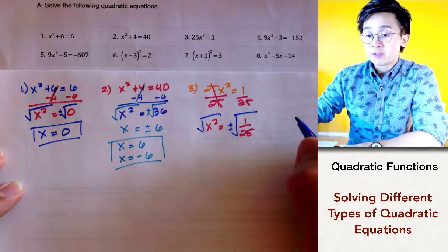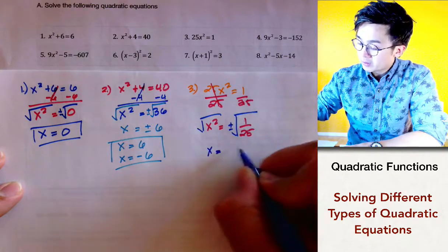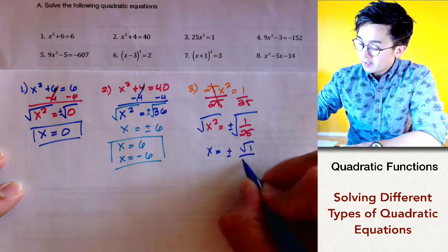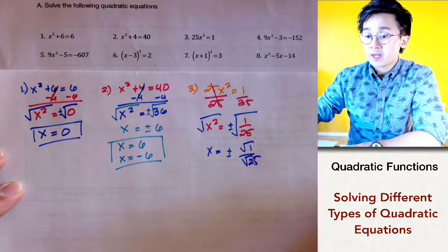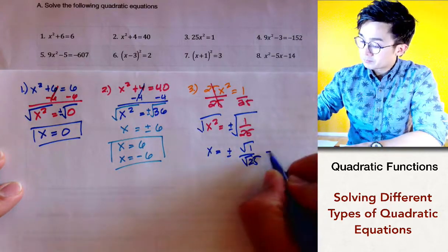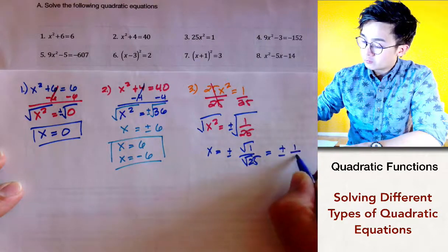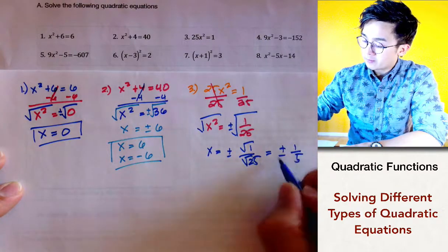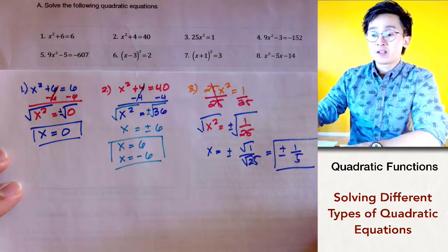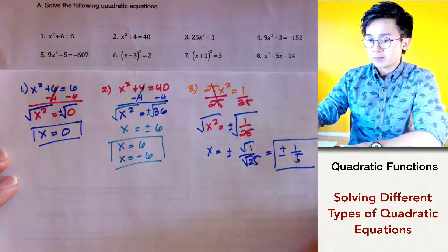We can simplify this radical by taking the square root of 1 and the square root of 25. Since both are perfect squares, we get plus or minus 1 over 5. These are the two solutions for problem number three.